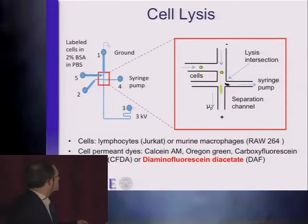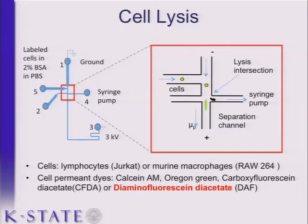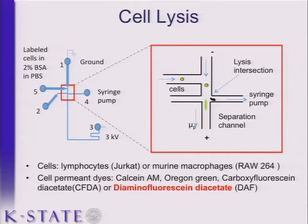In the new device, as cells move through the intersection, we keep them in the electric field a little bit longer, making it easier to lyse, and then inject the lysate into the separation channel. We're using two different types of immune cells: T-lymphocytes and murine macrophages (RAW 264 cells). These cells are initially loaded with either calcein AM or Oregon Green, and later results use carboxyfluoracine diacetate and diaminofluoracine, which reacts with NO.